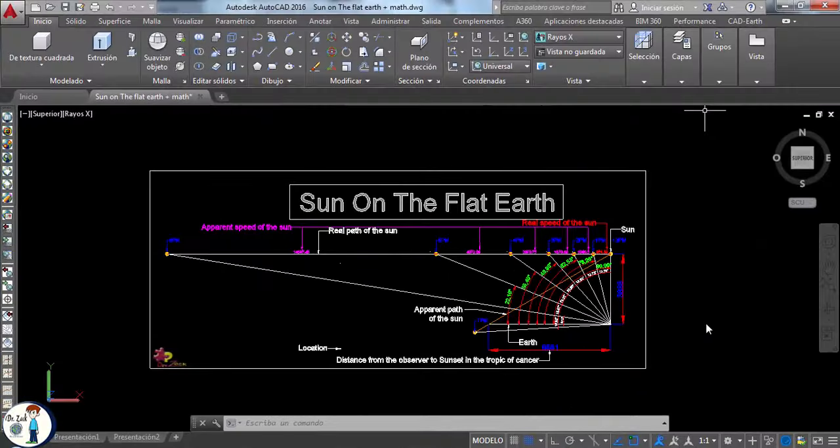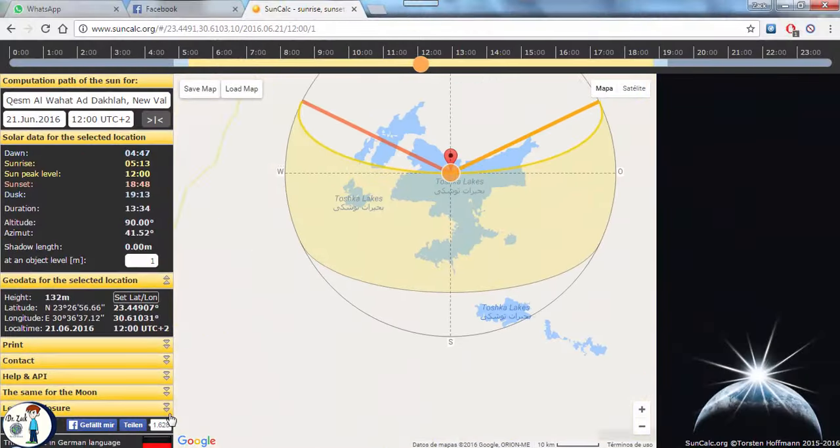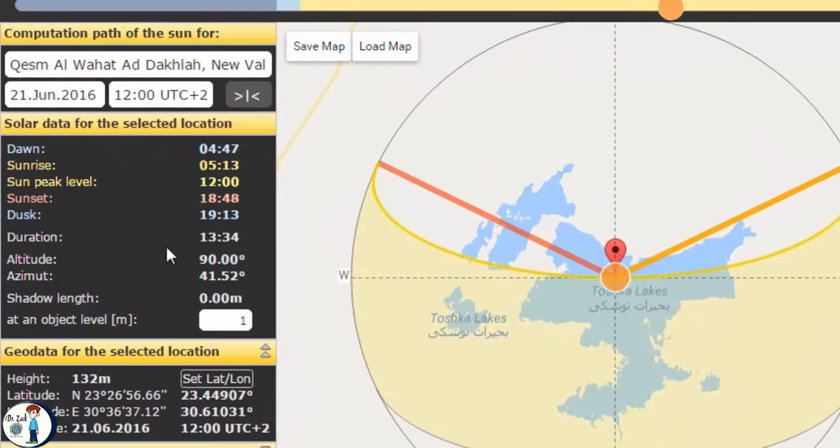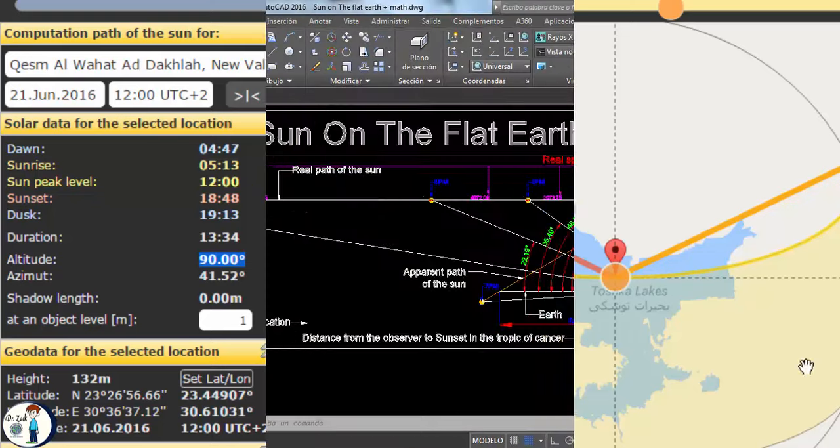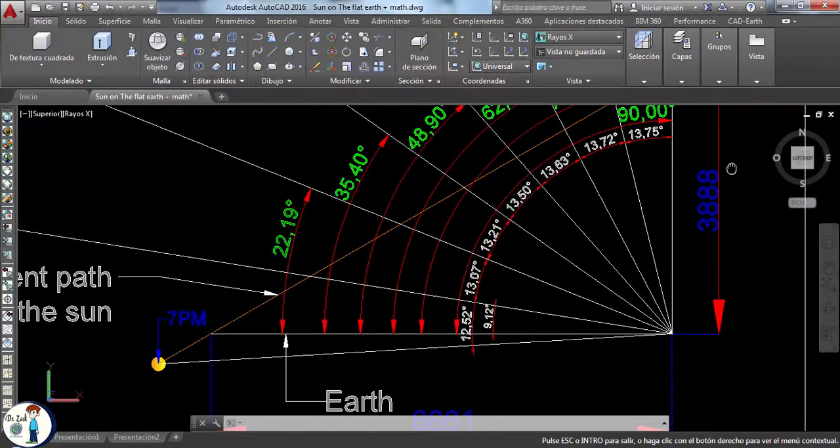This is a diagram I made in AutoCAD with the real elevation angles of the sun that we get from suncalk.org. This is the location and dates that I used. You can try that yourself. So when we draw the angles accurately, we notice that the sun travels faster the more it moves away from the observer.